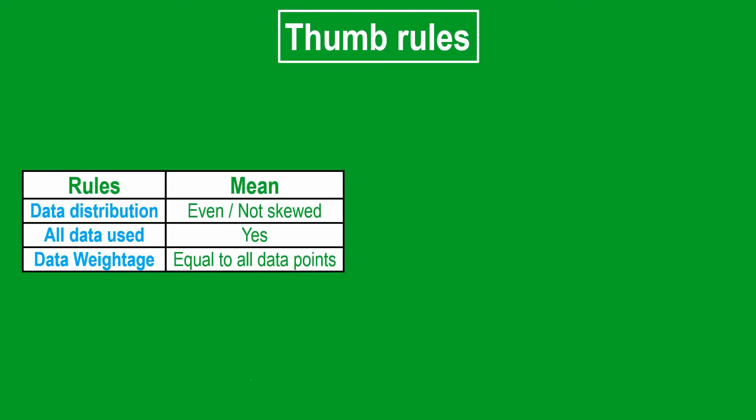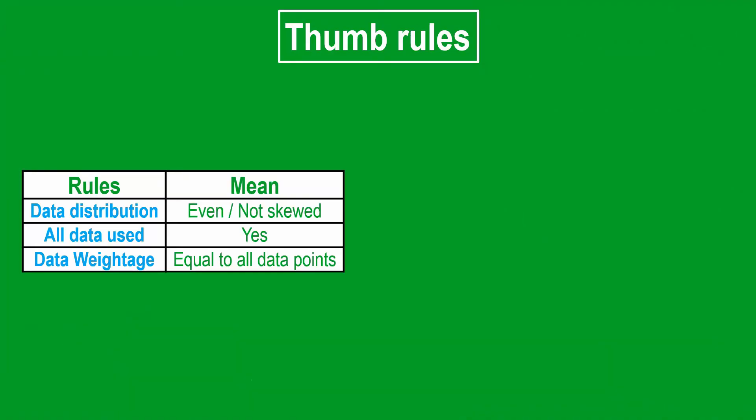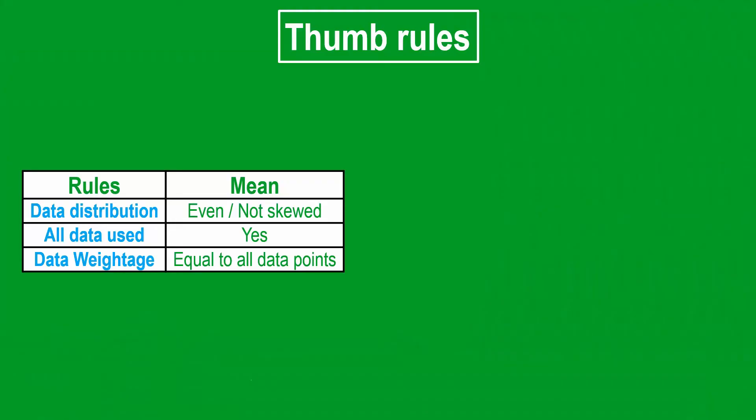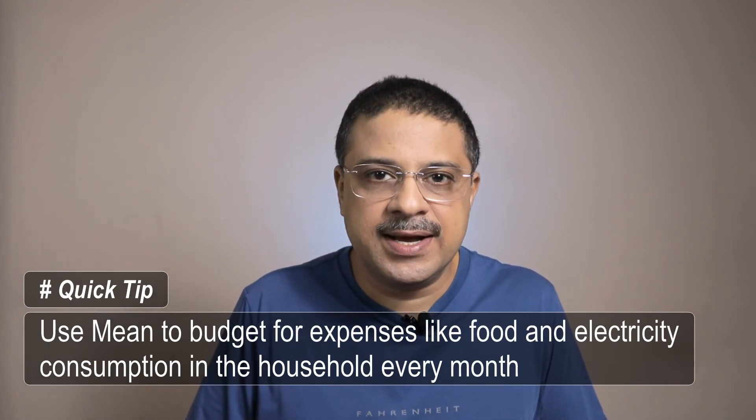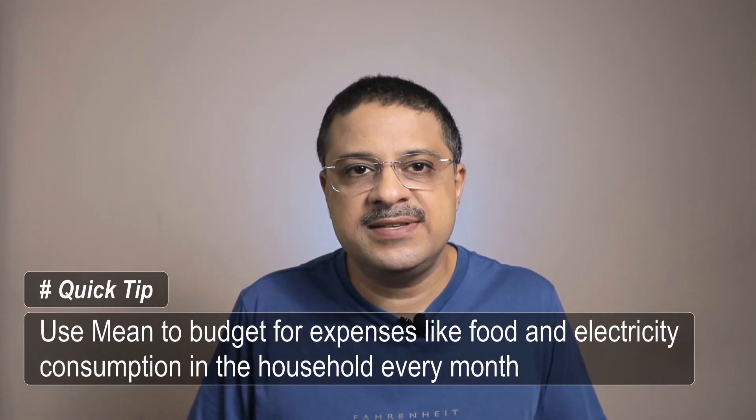To help you figure out when to use mean and median, here is a summary table with thumb rules. We can safely use mean when: first, data is evenly distributed and not skewed; second, we need to use all the data available; and third, there are no special circumstances — like drought affecting agricultural produce — that distort the importance given to each data point. If you are violating conditions one or two, consider using the median. Quick tip: you can use the mean to study household expenses like food and electricity consumption to budget and set savings targets every month.